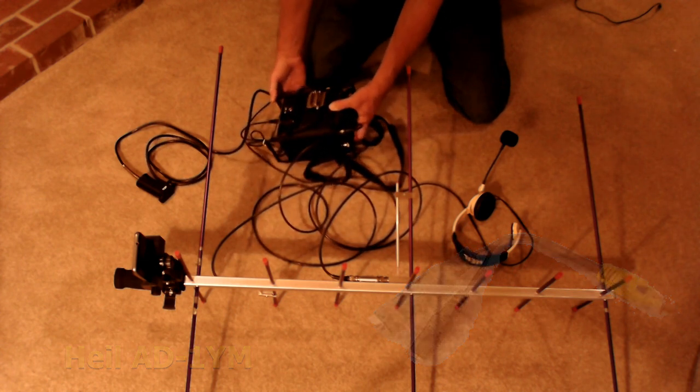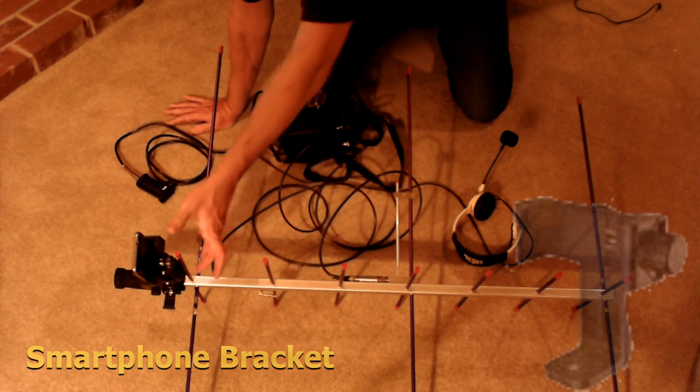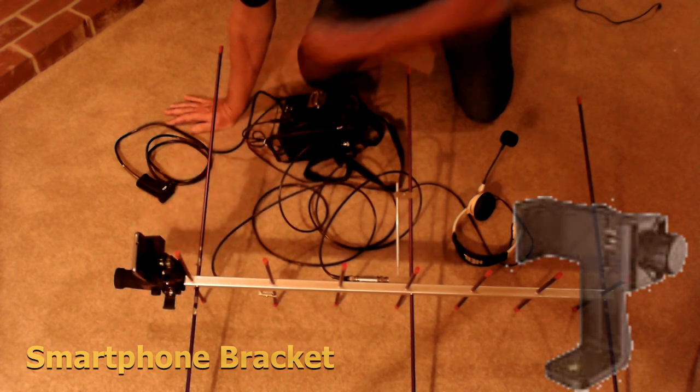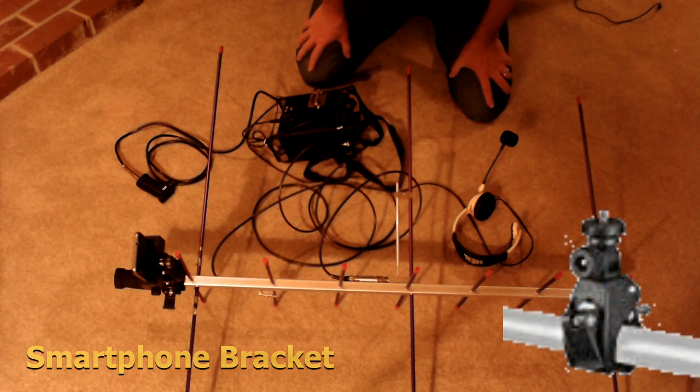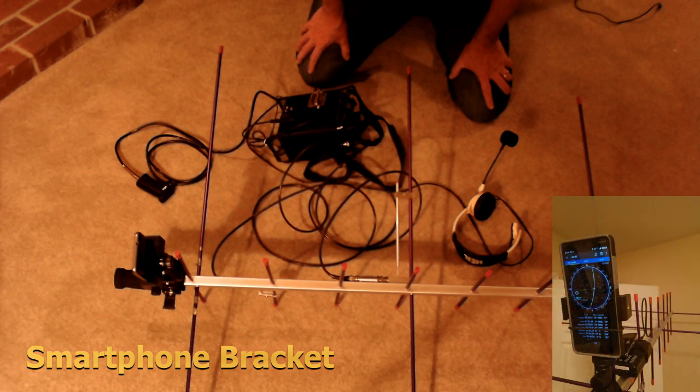Here we have the bracket for the cell phone so I can use the tracking software. With that bracket, I can aim right at the satellite. I know I'm right on, and of course I can hear myself on the downlink. It's really important to be right on target.